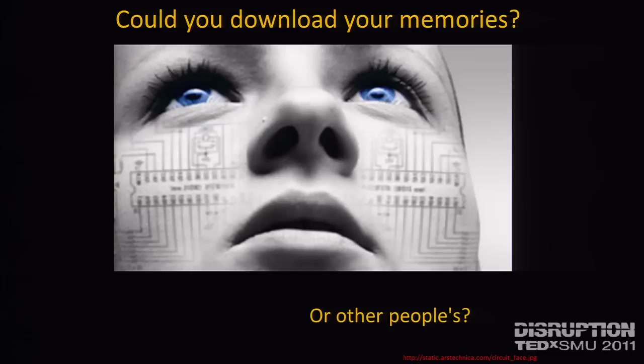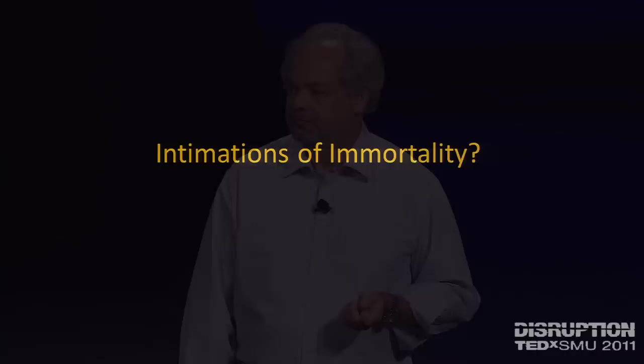The consequence of that experiment is that someday you might be able to download your own memories. And if you can download your own memories, maybe you can download other people's. Take these two experiments together and it means you can make a photocopy of your body from any one of your cells, and you might be able to eventually download some of the memories.